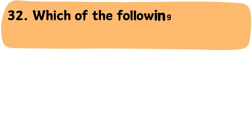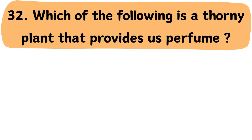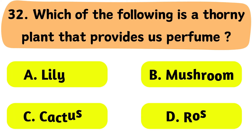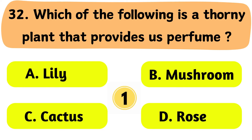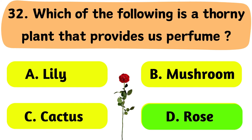Question No. 32: Which of the following is a thorny plant that provides us perfume? A. Lily. B. Mushroom. C. Cactus. D. Rose. The correct answer is Option D: Rose.